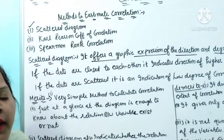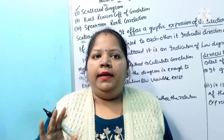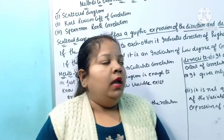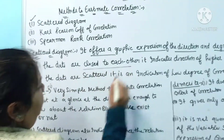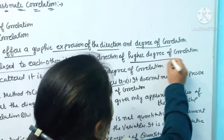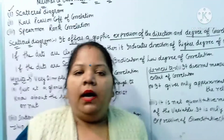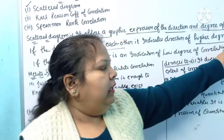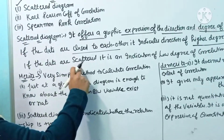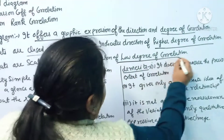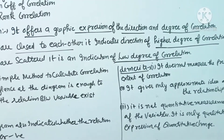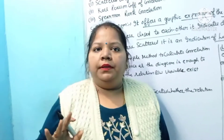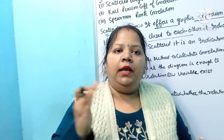Now we will see on the graph paper how x and y variables will show us the dots, which will match the direction of the scatter diagram. If the dots are close to each other, then we will see the direction of correlation. If the dots are scattered, then no clear direction is provided, which shows a low degree of correlation.